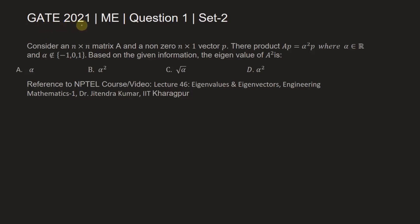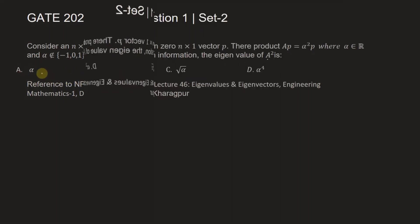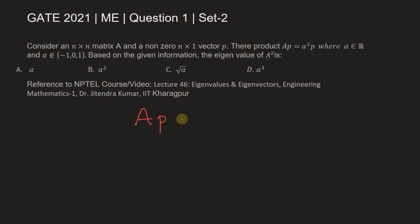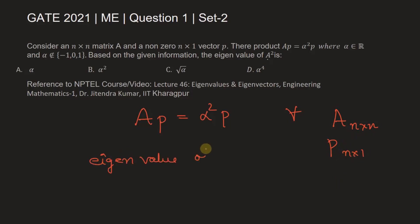This problem is from GATE 2021 Mechanical Engineering Set 2. The question considers an n×n matrix A and a nonzero n×1 vector p, where their product Ap is equal to α²p, with α belonging to all real numbers and α not equal to -1, 0, or 1. Based on this information, we need to find the eigenvalue of A².